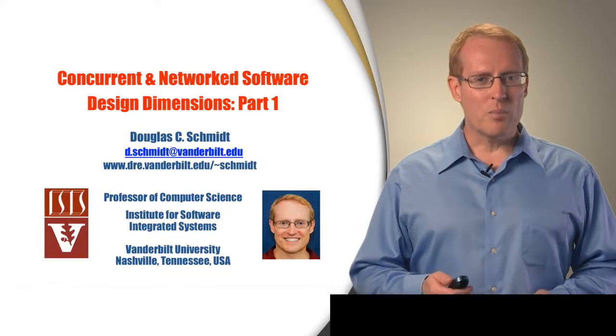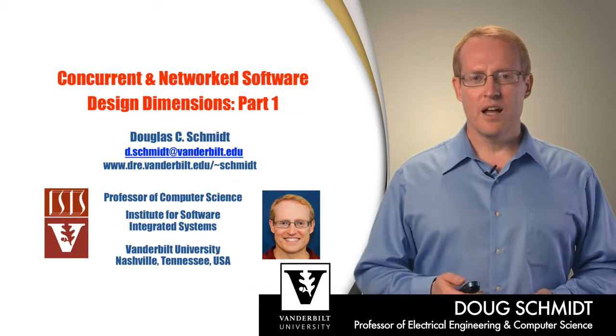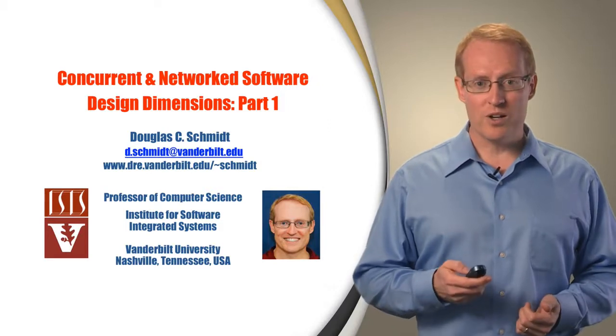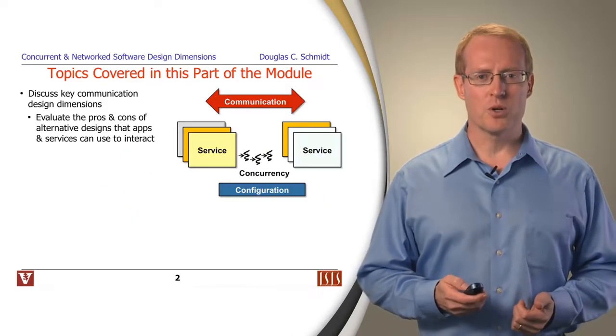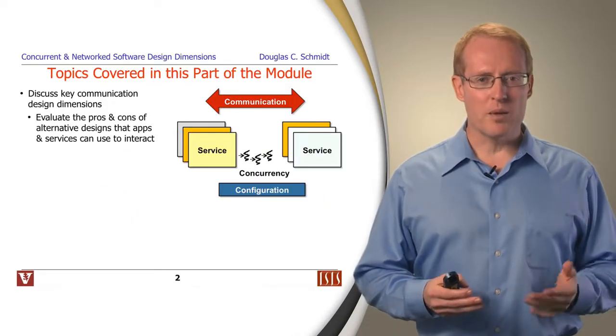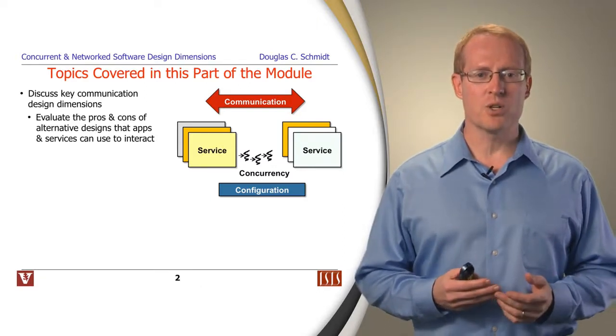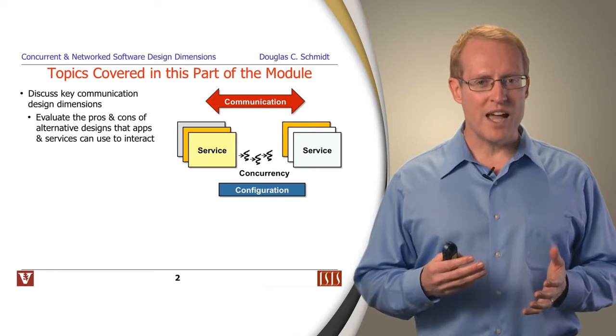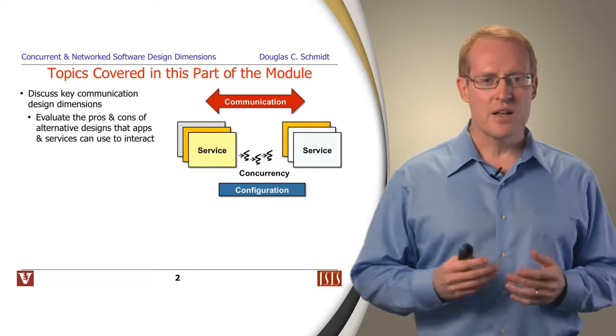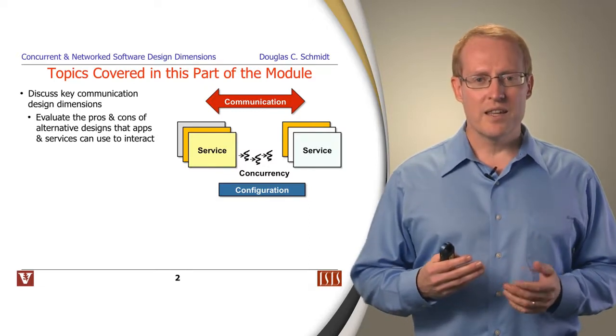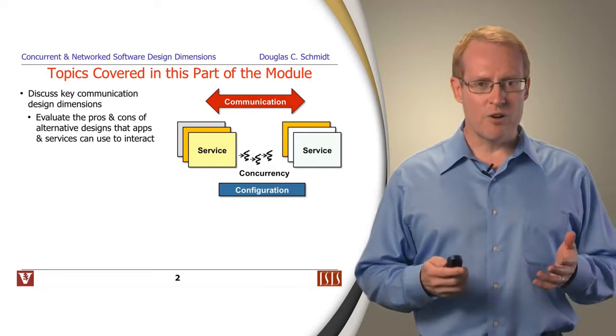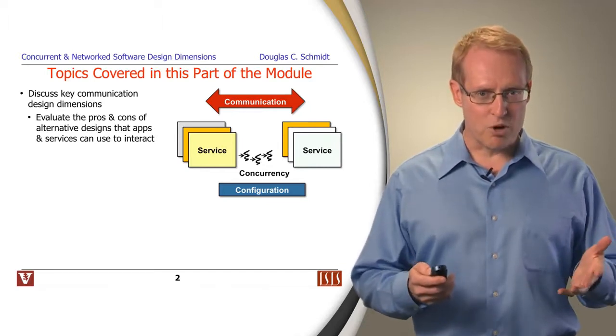Hello, and welcome back to Part 1 of the Concurrent and Network Software Design Dimensions module. In this part of the module, we're going to discuss key communication design dimensions, which will allow us to evaluate the pros and cons of alternative designs that apps and services can use to interact with each other across different process address spaces.